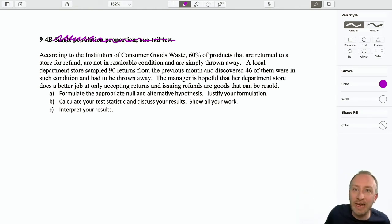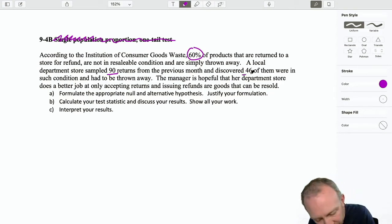Now once more we will go through this assuming we don't know this information and make sure that we can figure out just from what's in the problem what it is that we're supposed to test. Okay, so we're looking at the institution of consumer goods waste. They found that 60% of products that are returned to a store for refund are not in resaleable condition and are simply thrown away. A local department store sampled 90 returns, so there's our sample size.